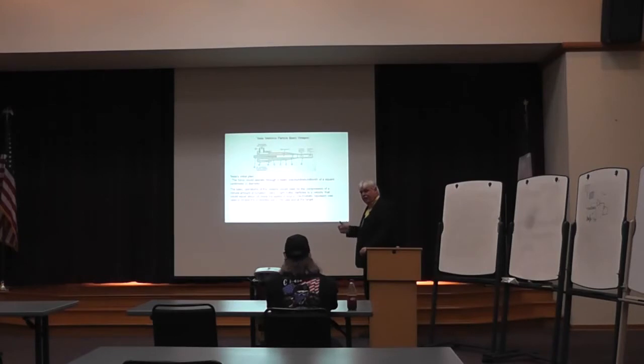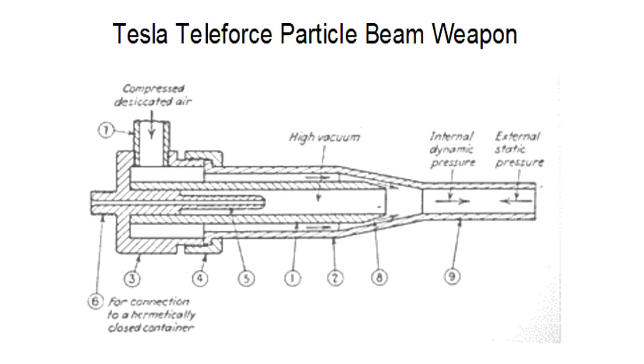What it did was take tungsten metal and cause it to break up under intense electrical pressure, making a beam of tungsten particles that would shoot out extremely fast. Anything in their way would be damaged.